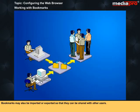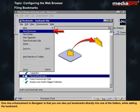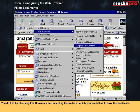Bookmarks may also be imported or exported so that they can be shared with other users. When you create a user profile, a set of bookmarks is automatically generated. Those bookmarks appear in various subject folders such as Education. One nice enhancement to Navigator is that you can also put bookmarks directly into one of the folders while adding the bookmark. You do this by choosing File Bookmark and selecting the folder in which you would like to save the bookmark.